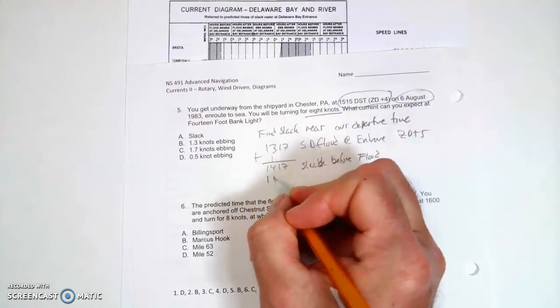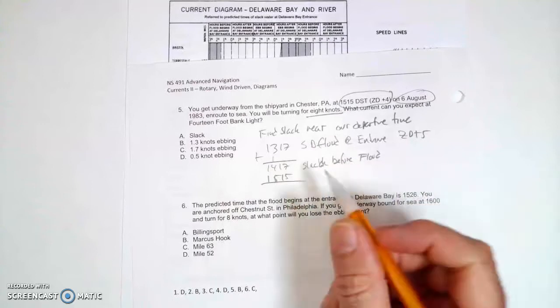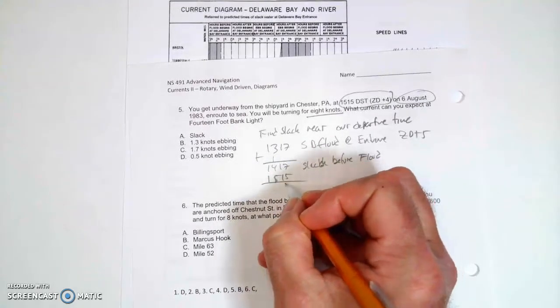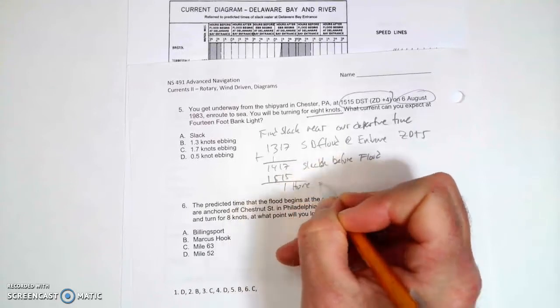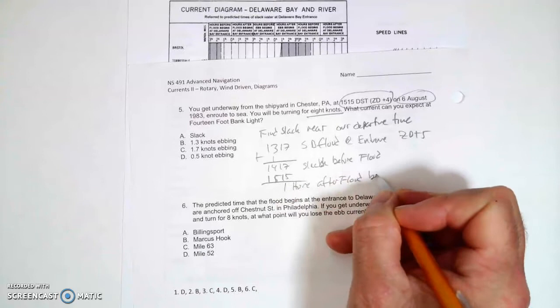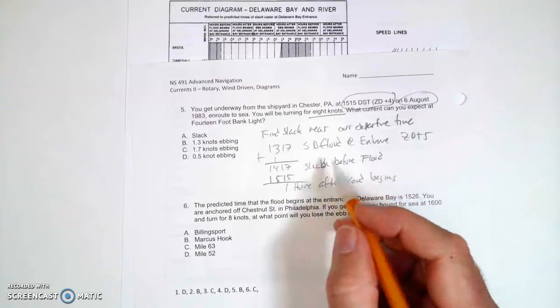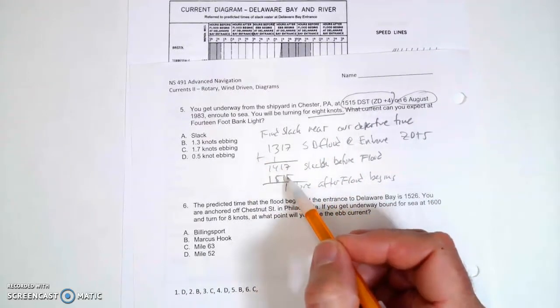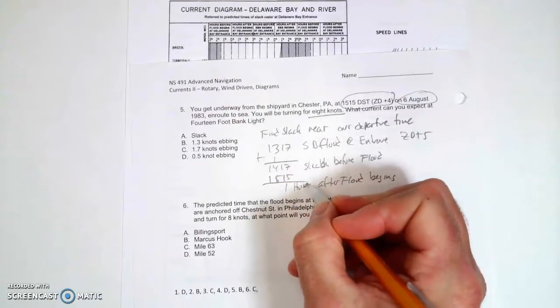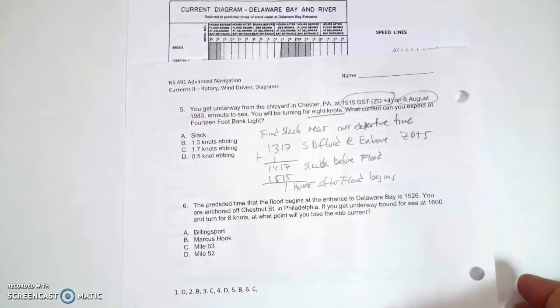What time am I leaving? I'm leaving 1515. That's basically an hour later. So I'm going to be leaving one hour after the flood begins. If the slack is at 1417 and I'm leaving at 1515, that's 58 minutes, but that's basically an hour. I'm leaving one hour after the flood begins.